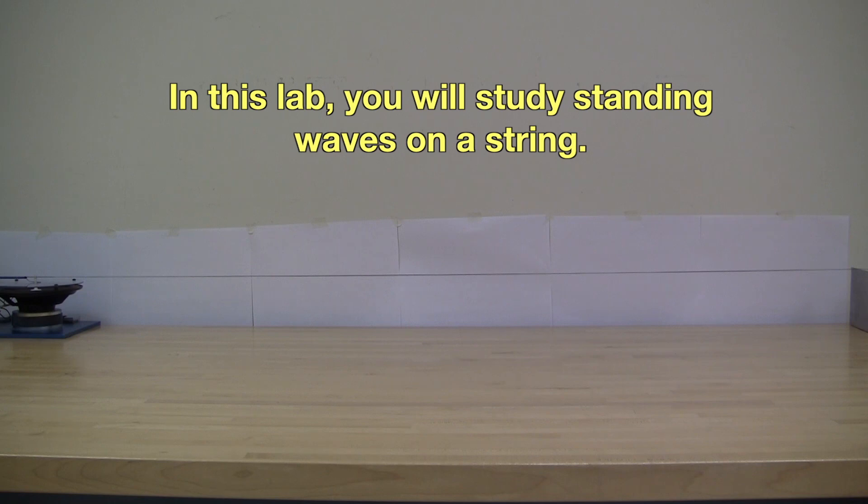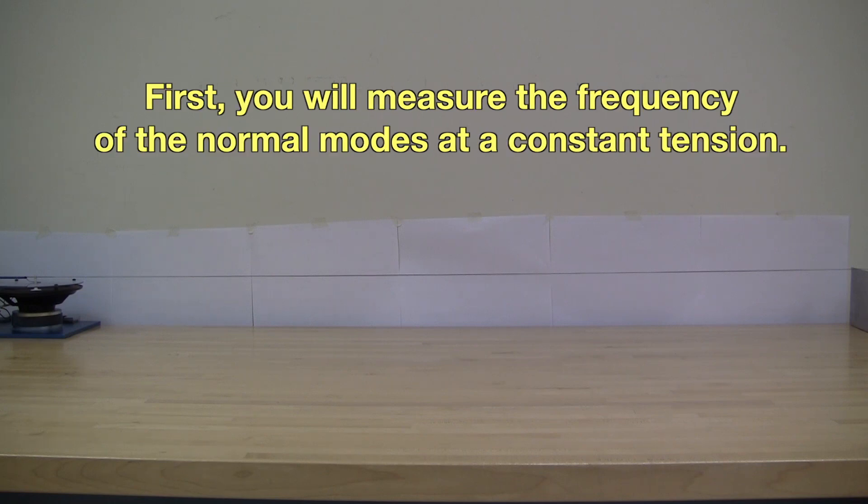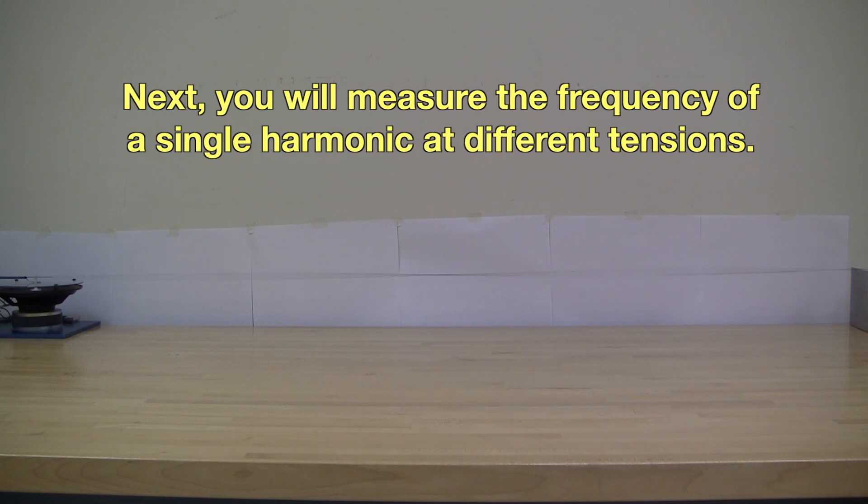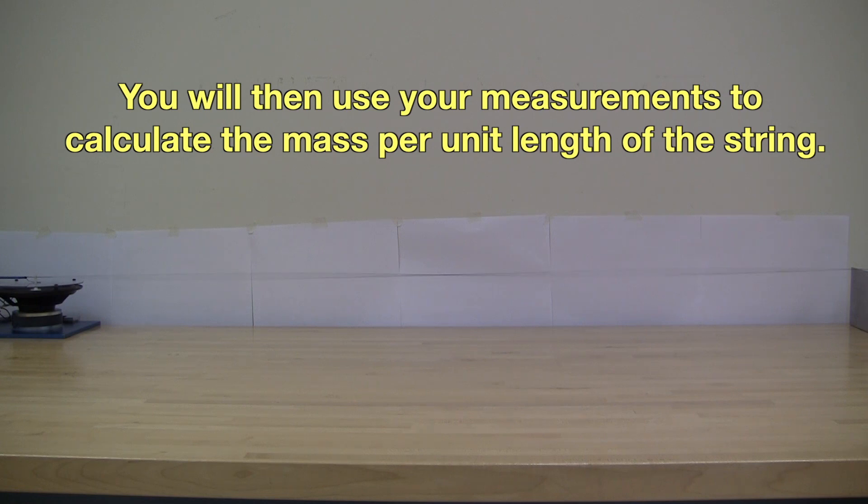In this lab, you will study standing waves on a string. First, you will measure the frequency of the normal modes at a constant tension. Next, you will measure the frequency of a single harmonic at different tensions. In each case, you can use these measurements to calculate the mass per unit length of the string.